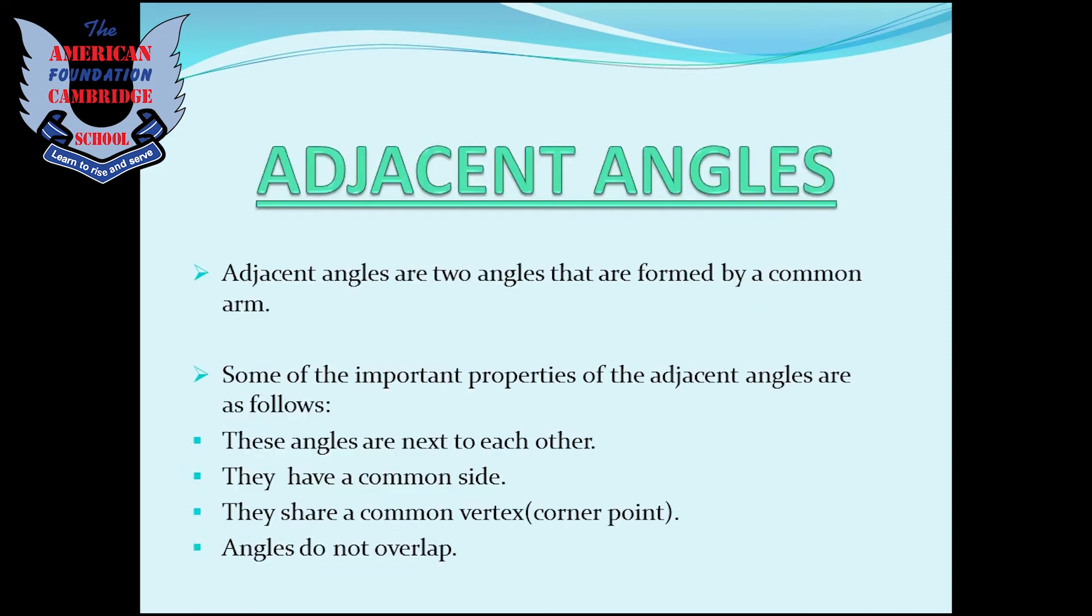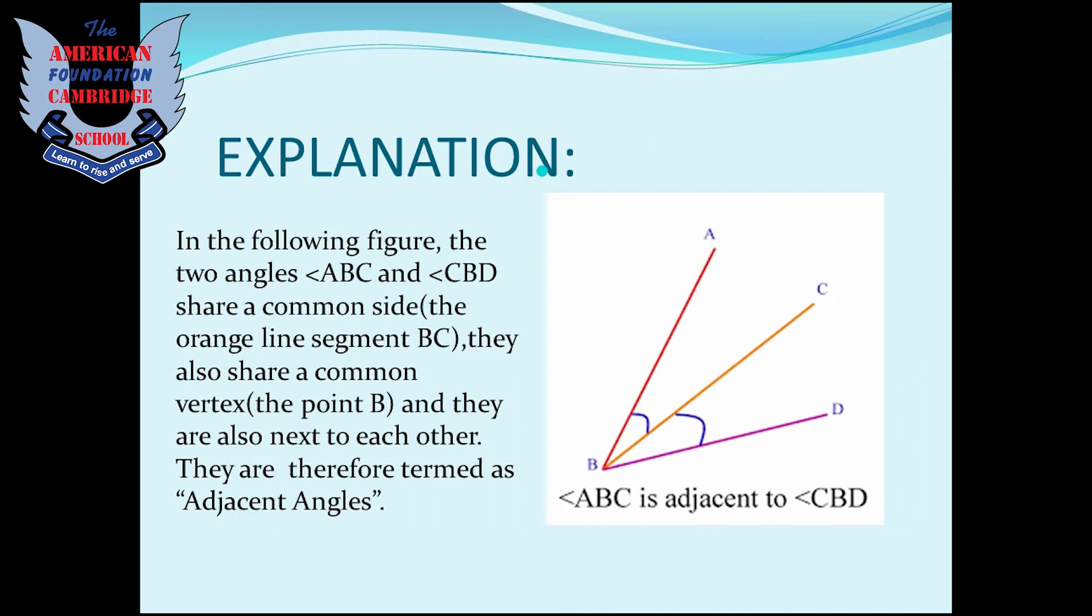The first topic is adjacent angles. Adjacent angles are two angles that are formed by a common arm. Some of the important properties of the adjacent angles are as follows: These angles are next to each other. They have a common side. They share a common vertex, that is corner point, and angles do not overlap.